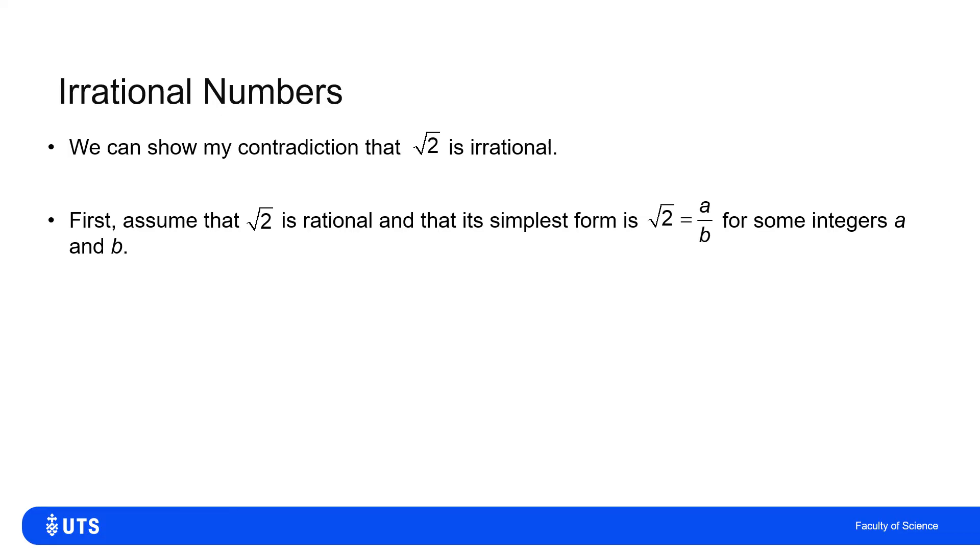And this is not just any A and B, I will assume that that is the simplest form of the rational number square root of two. Well, if the square root of two is A over B, then A squared is equal to two B squared.